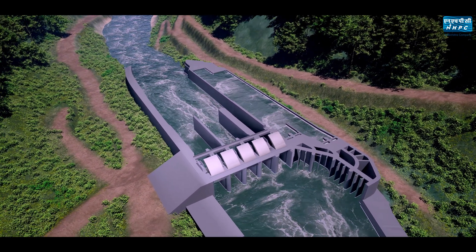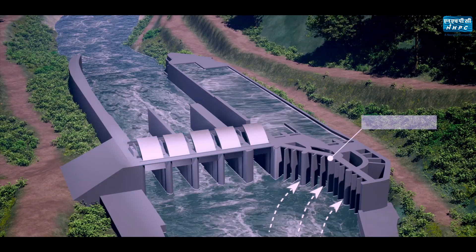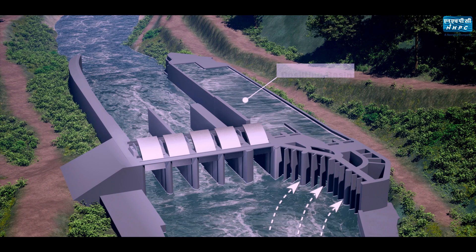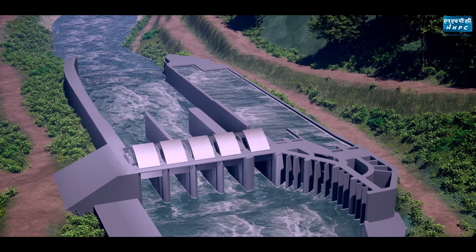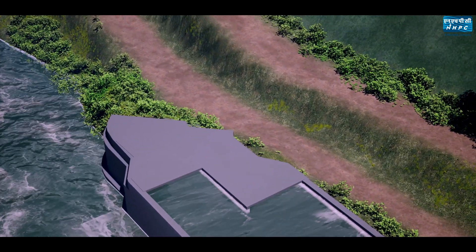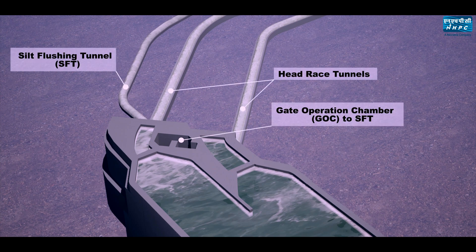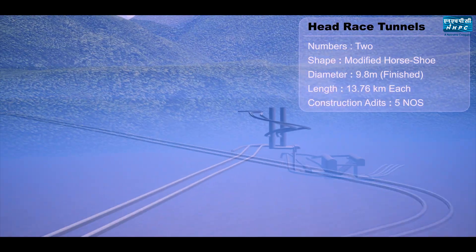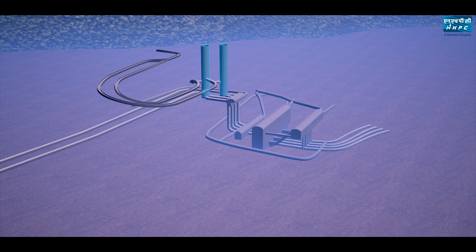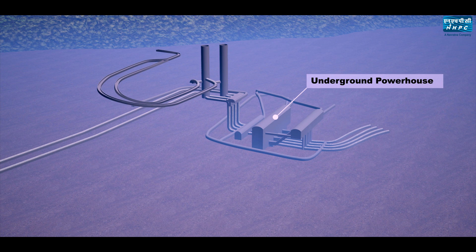The major components of the project are: a concrete barrage on the river, a head regulator, two desilting basins, two intakes to draw water into the water conductor system, two head race tunnels for conveying water from the barrage to the powerhouse, two surge shafts, four pressure shafts, an underground powerhouse for housing the machineries to generate electricity, a transformer cavern, four tail race tunnels, and a surface pothead yard.